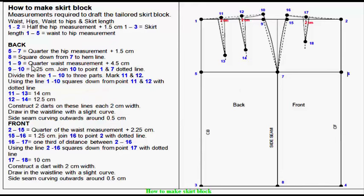1-9: Quarter waist measurement plus 4.5 cm. 9-10 equals 1.25 cm. Join 10, 2, and 7 with dotted line.